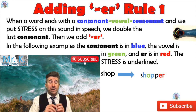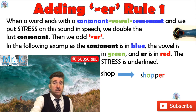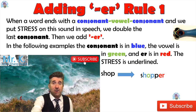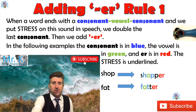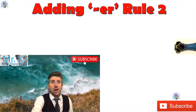So that's how we add the ER suffix to a consonant-vowel-consonant ending word. Let's get another example: 'fat.' Consonant, vowel, consonant — we double the last consonant and add ER: 'fatter.' Excellent.